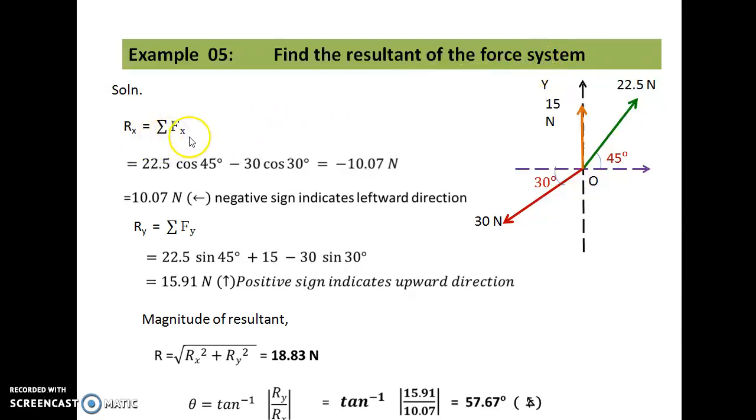Solution: Rx equal to sigma Fx equal to 22.5 cos 45 minus 30 cos 30 equal to minus 10.07 Newton. The negative sign indicates leftward direction.